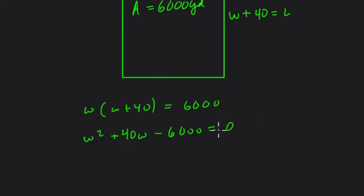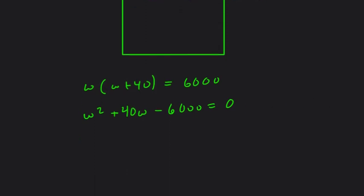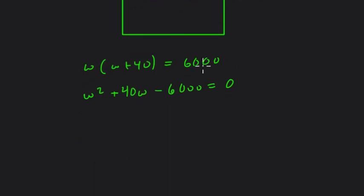Once we get zero on one side, we can use the quadratic formula or whatever method we want. So here, I'm going to use the quadratic formula. We have A equals 1, B equals 40, right? A is the coefficient of W squared, B is the coefficient of W, and C is the constant on its own.